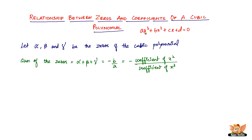The coefficient of x cubed will be a, the coefficient of x squared will be b, the coefficient of x will be c, and the constant is going to be d. All you have to remember is: alpha plus beta plus gamma equals minus b by a.